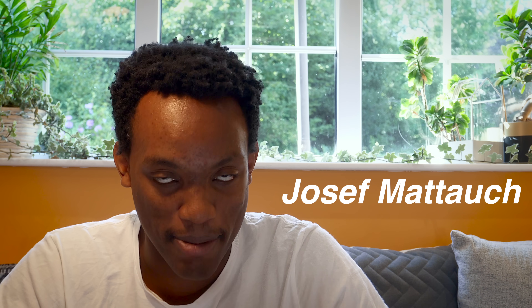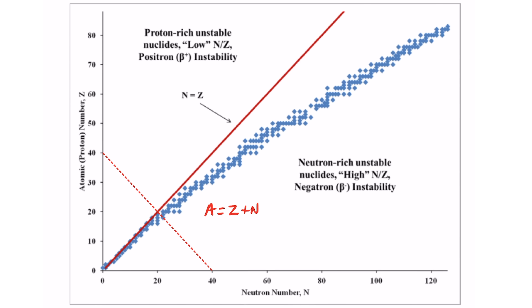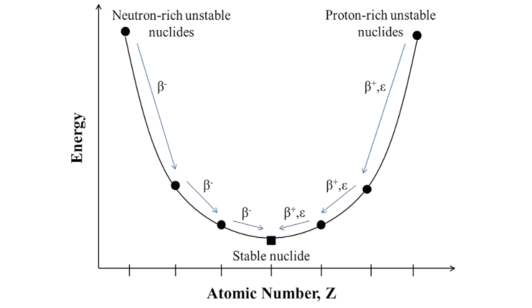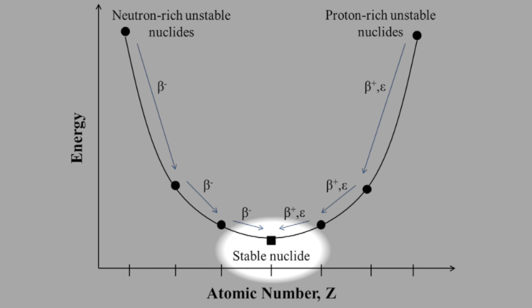Fortunately, thanks to a Bohemian physicist named Joseph Mattauch, there is another empirical trend from this chart which explains why these isotopes aren't actually stable. On the chart of nuclides, an isobar is a line of constant atomic weight — such as sulfur-40, chlorine-40, argon-40, potassium-40, and calcium-40. Mattauch's rule says that no two adjacent nuclides in an isobar can both be stable. The reasoning is that if there is a stable element a small decay step away on the same isobar, then that configuration would be energetically favored.